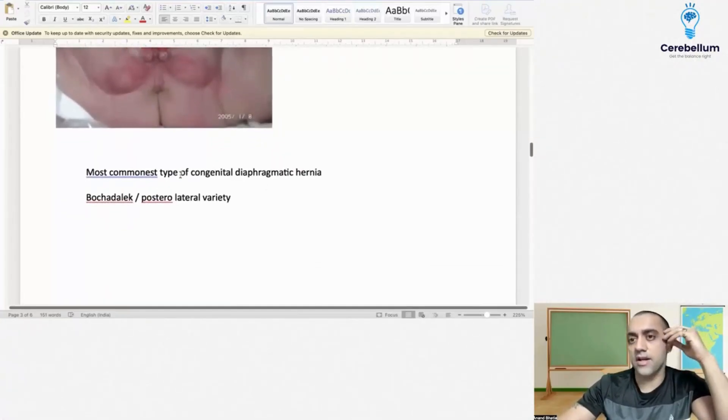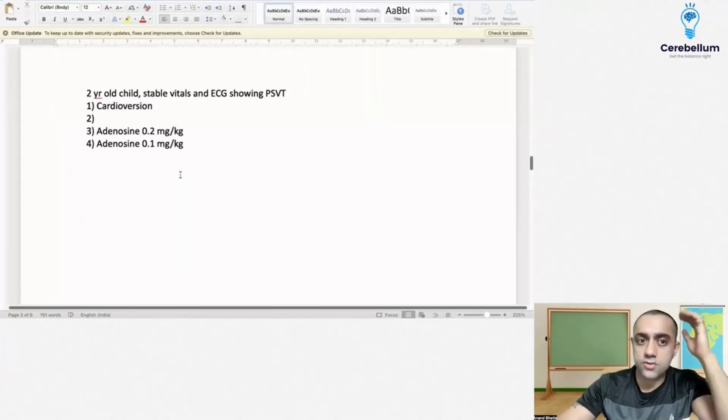The next was most common type of congenital diaphragmatic hernia - is a posterolateral variety, that is Bochdalek hernia.